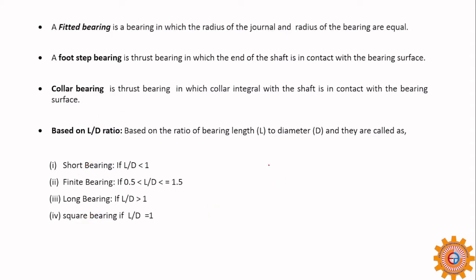There is another type called a fitted bearing, which means it is a close clearance fit — it rotates but the gap between the bearing and journal is smaller. The radius of the journal and the radius of the bearing are equal, meaning it is a close clearance fit.